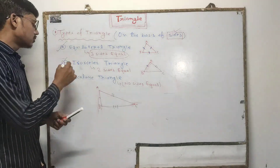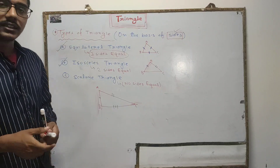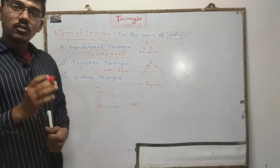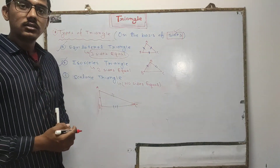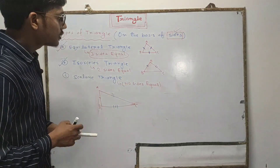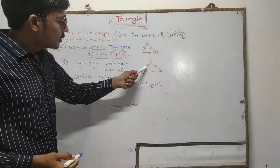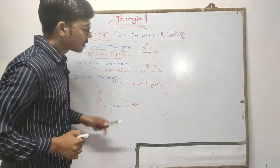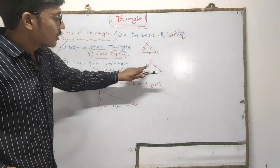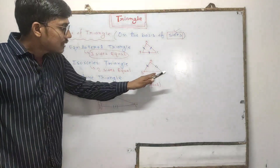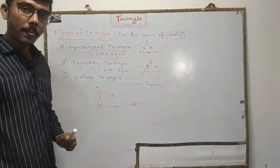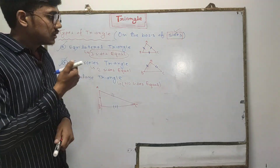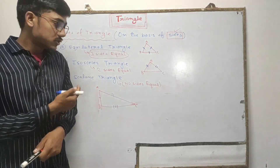The second type is an isosceles triangle. An isosceles triangle is a triangle in which only two sides are equal. In this figure you can see two sides are equal, and one side is not equal. So a triangle in which only two sides are equal is called an isosceles triangle.